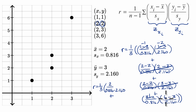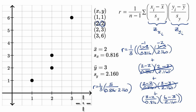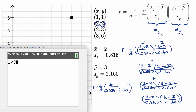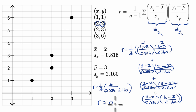Three minus two is one, and six minus three is three, so we add three over 0.816 times 2.160. These have the same denominator, so two over this thing plus three over this thing equals five over this thing. So r equals one third times five over 0.816 times 2.160. Using a calculator: one divided by three, times five, divided by 0.816 times 2.160, gives us r of approximately 0.946.